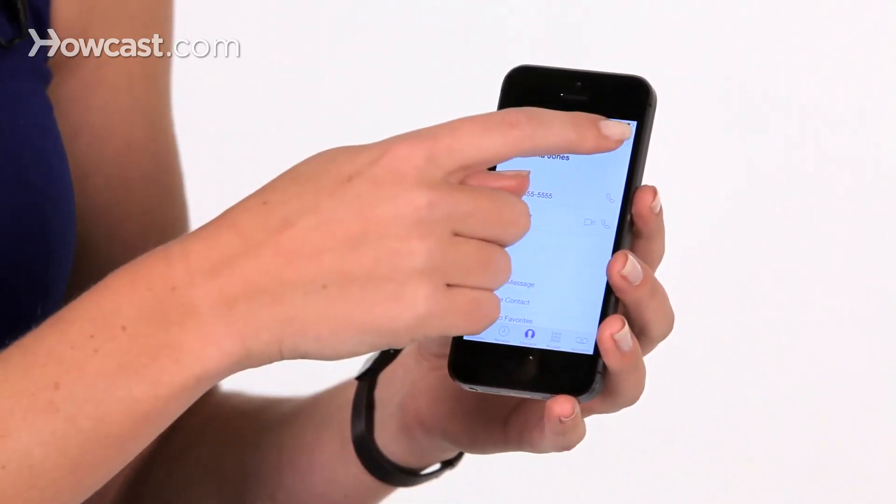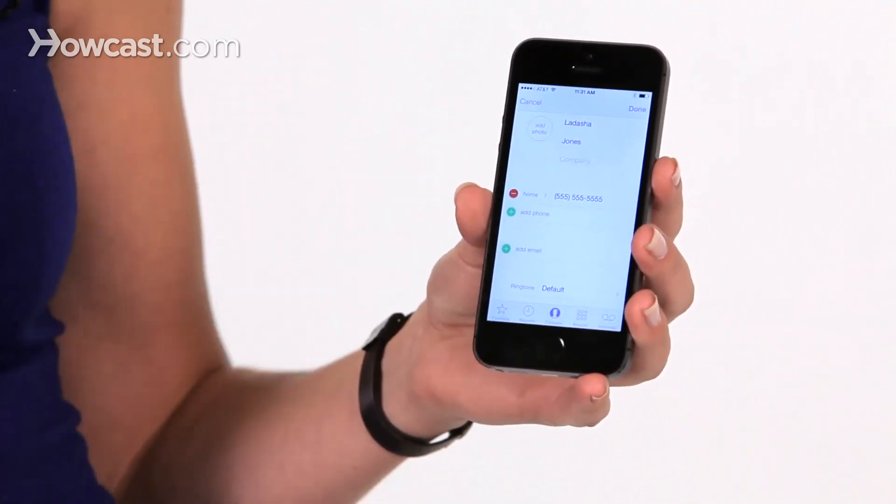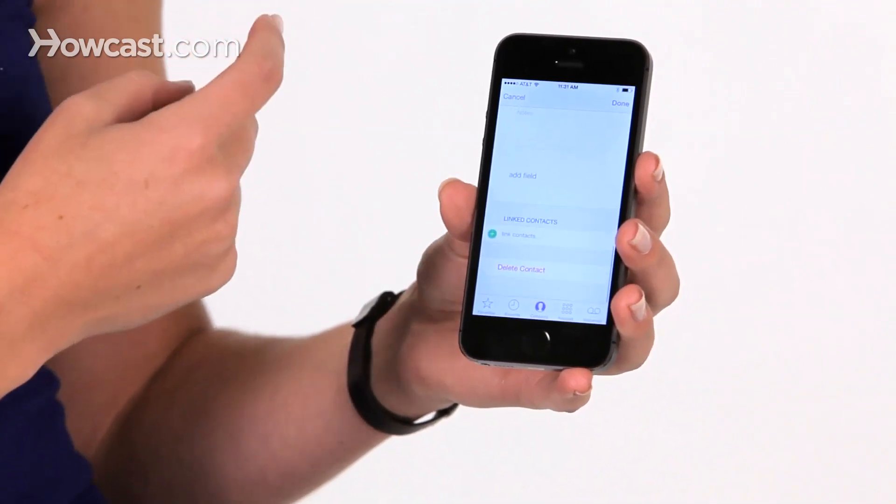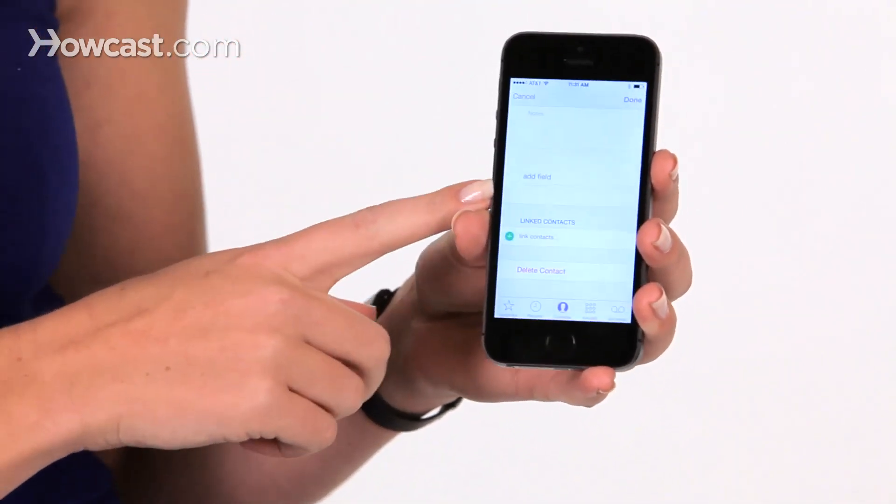Now, when I hit edit on the top left, you get a lot of fields that you can edit. You can scroll all the way to the bottom, and you'll see an option that says add field.